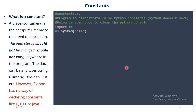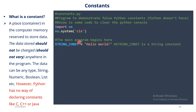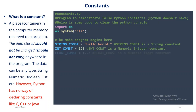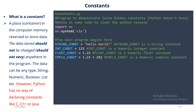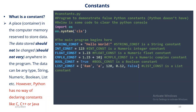Let's see how we can represent constants in Python, even though Python does not have a way of creating constants. What do Python programmers do? The constant names are created in capital letters with underscores to connect them if need be. So we say STRING_CONST equal to 'Hello World', INT_CONST, FLOAT_CONST, COMPLEX_CONST, BOOL_CONST, LIST_CONST — you can create them just like this.